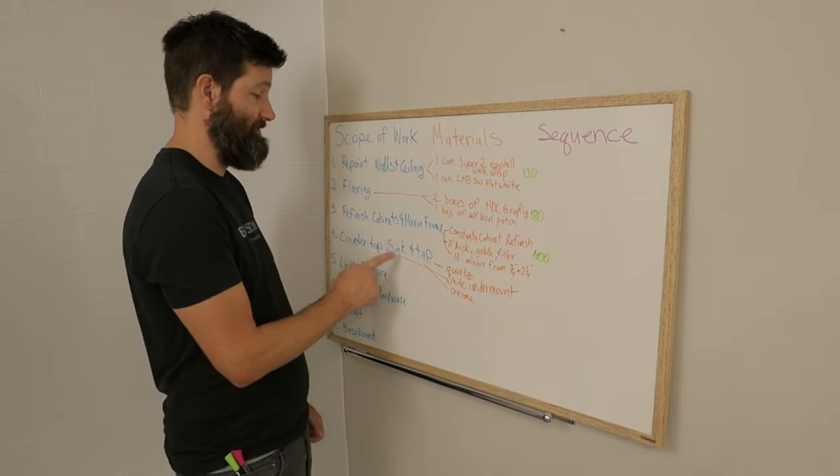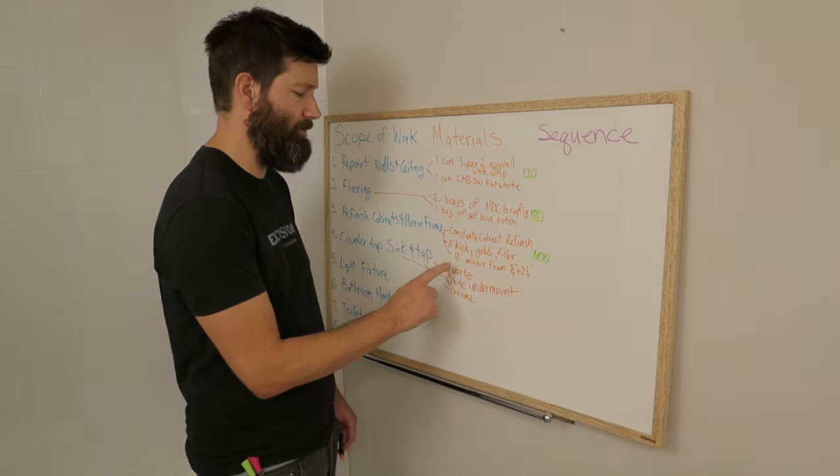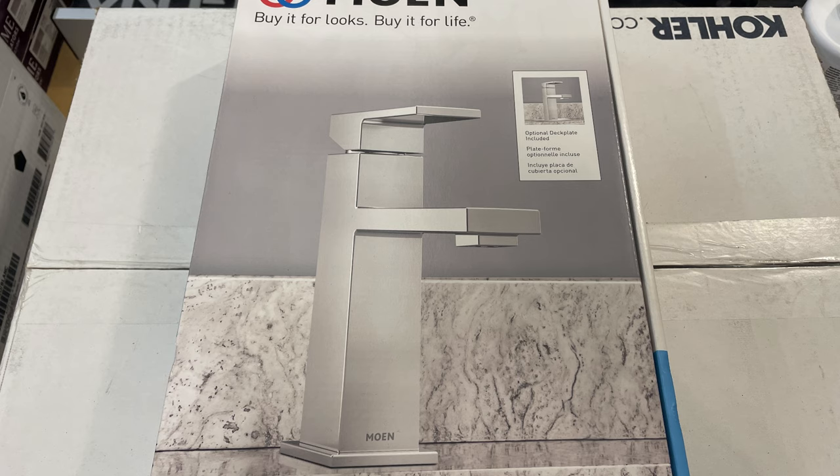So the next thing up is the countertop, sink and tap. This is going to be the most expensive part of the renovation. I'm going to go for a quartz countertop, a white undermount sink, and some type of a chrome tap.